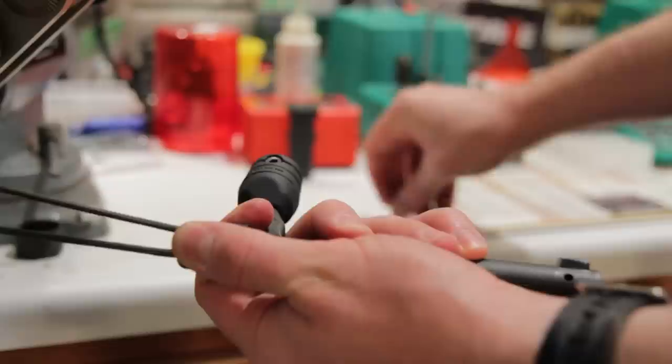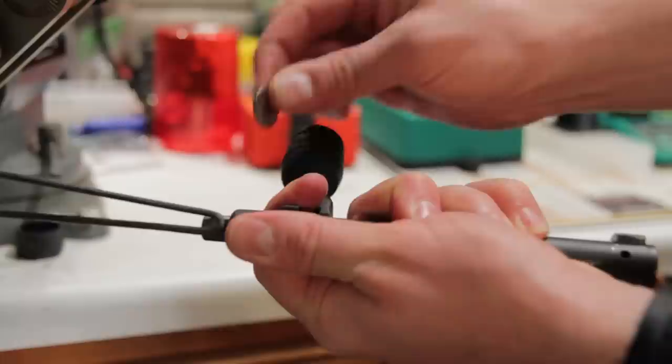You pull the bolt forward which then extends the firing pin assembly out until you can see a slot in the side of it.